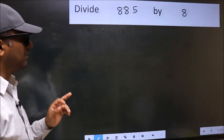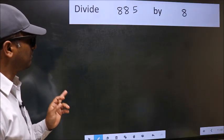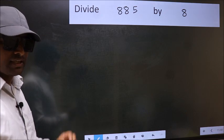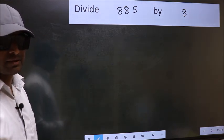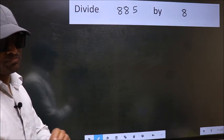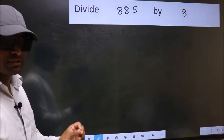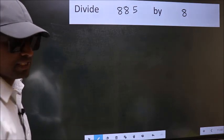Divide 885 by 8. While doing this division, many do this mistake. What is the mistake that they do? I will let you know. But before that, we should frame it in this way.